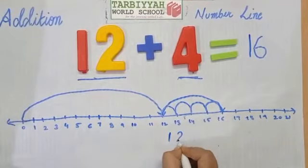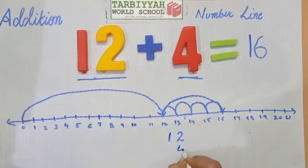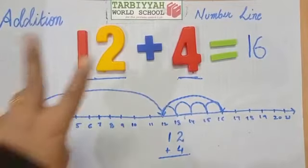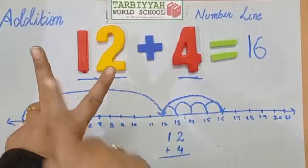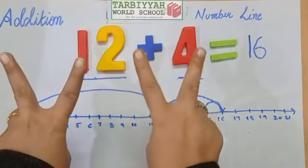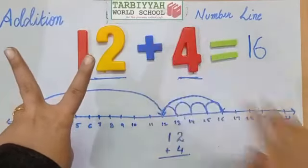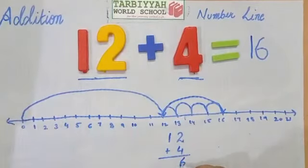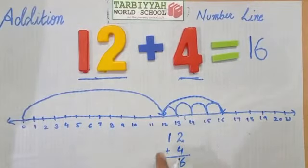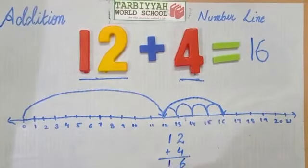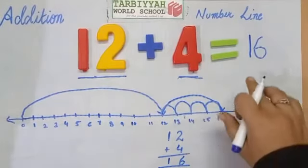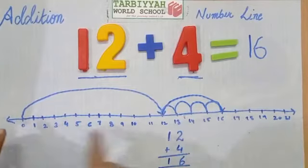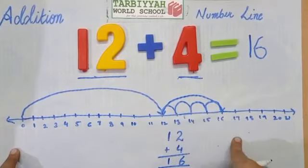We can also do it like this: 12 plus 4. We have to add 4 to 2: 2, 3, 4, 5, 6. And we write 1 as it is. So it is 16. Our answer is correct. This is how we add on the number line.